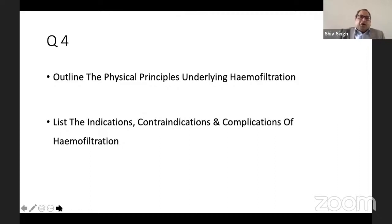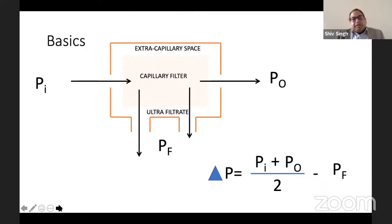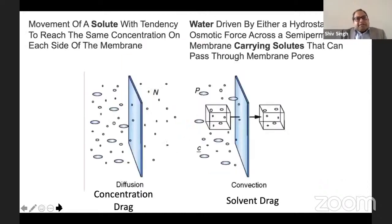The fourth question is on ITU — the physical principles underlying haemofiltration, and its indications, contraindications, and complications. The basic principle is transmembrane pressure: TMP = (inflow pressure + outflow pressure)/2 minus the filtration pressure. There are two key mechanisms: diffusion and convection.